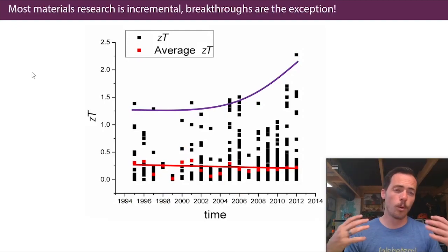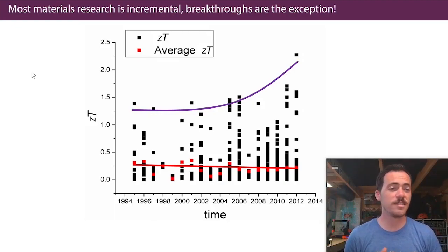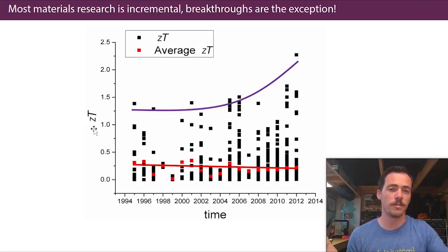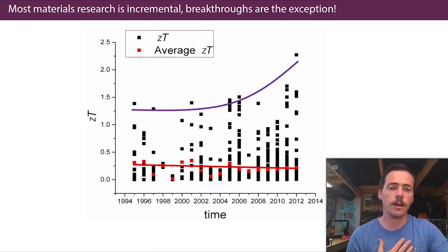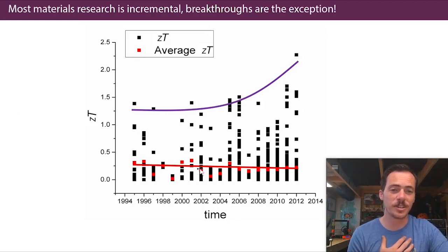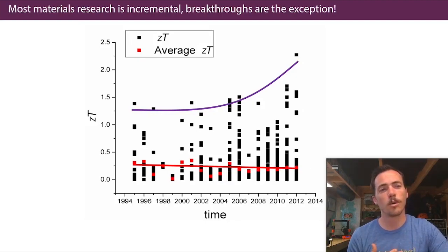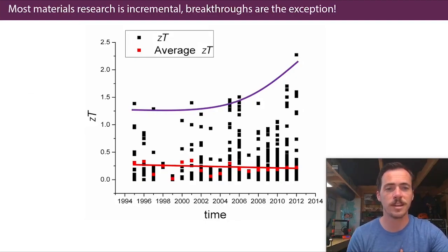Here's another problem. Just throwing more and more researchers at a problem — hiring more scientists, building more universities — isn't necessarily going to fix things. Take thermoelectrics: the figure of merit ZT scales with efficiency, and ZT had a ceiling of about 1 for many decades before we started breaking above it in the early 2000s. But on average, as more researchers got into thermoelectrics, the average ZT was actually trending slightly downward. Just having more researchers didn't solve the problem, because breakthroughs were the exception. We need a way to rationally design new materials rather than relying on happenstance breakthroughs.